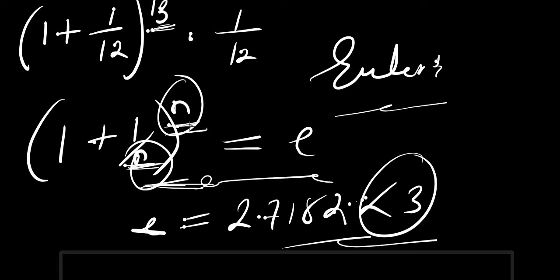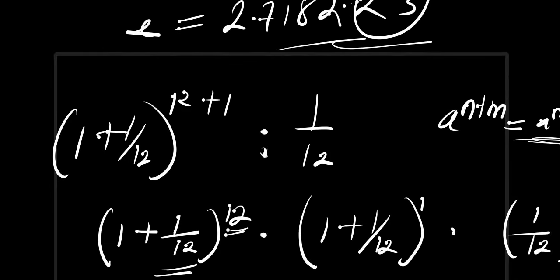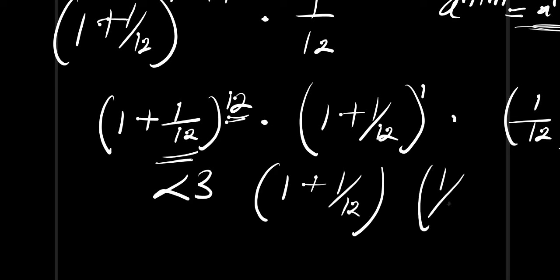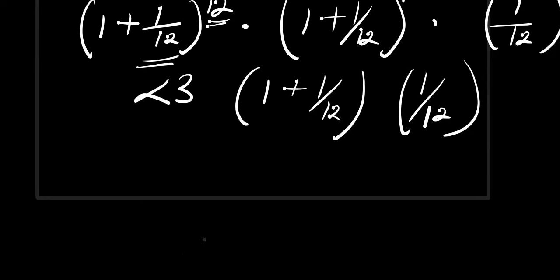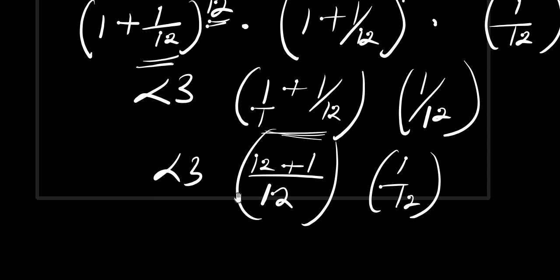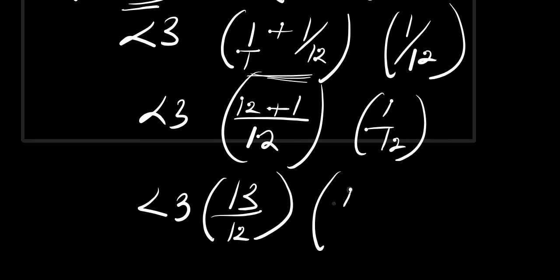Since the n here is exactly 12, we can replace (1 + 1/12)^12 with a value less than 3. So we have less than 3 times (1 + 1/12) times 1/12. Converting 1 + 1/12 to an improper fraction using LCM gives 13/12. So we have less than 3 times 13/12 times 1/12.